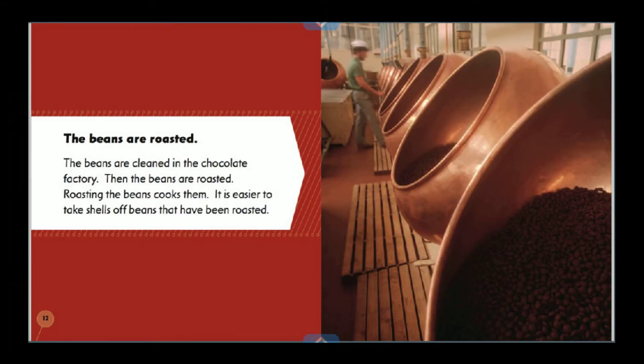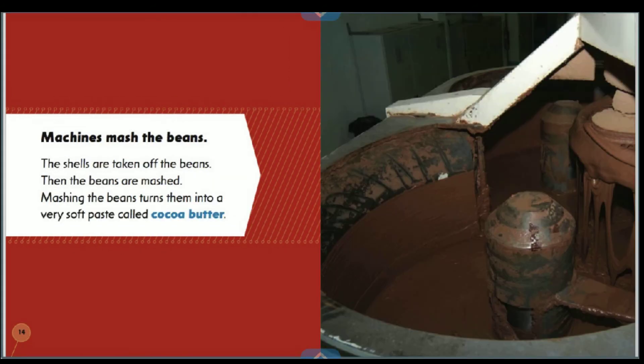The beans are roasted. The beans are cleaned in the chocolate factory, then the beans are roasted. Roasting the beans cooks them, and it is easier to take the shells off beans that have been roasted. The shells are then taken off the beans.